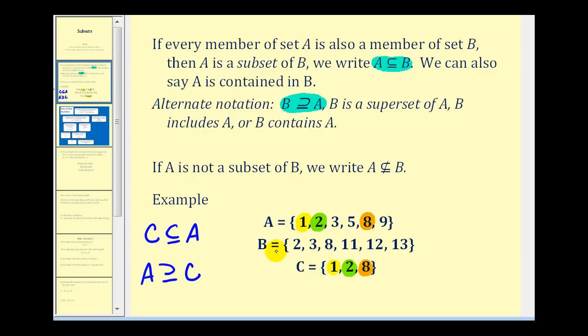Or we can say A is a superset of set C. Now looking at set B and C, notice that set B contains two and eight, but does not contain the number one. Therefore we can say that C is not a subset of set B.